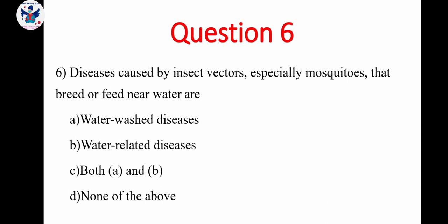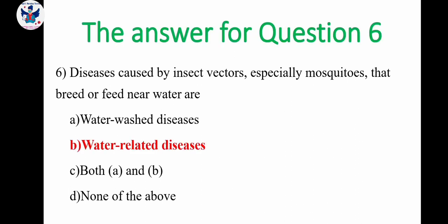Next, question number 6. Disease caused by insect vectors, especially mosquitoes that breed or feed near water or water washed disease, water related disease, both A and B, none of the above. So the correct answer is water related disease. Because water washed disease is not there. So definitely the answer will be option B, water related disease.